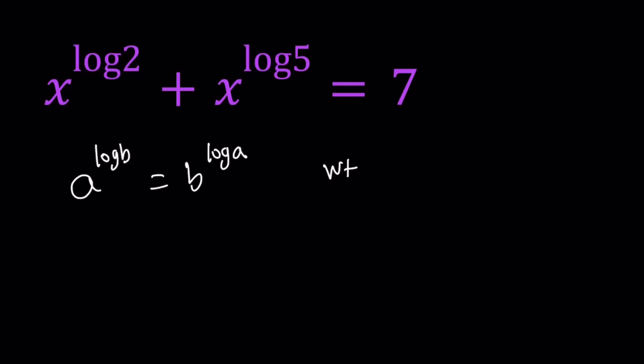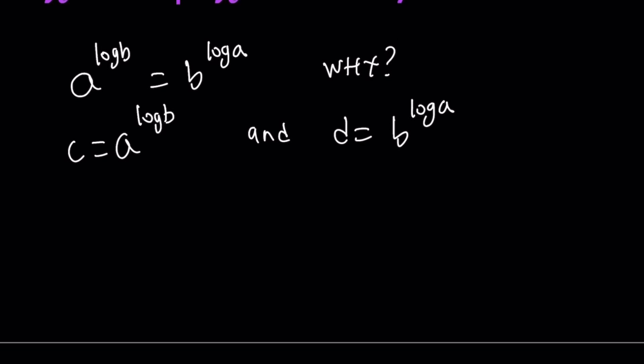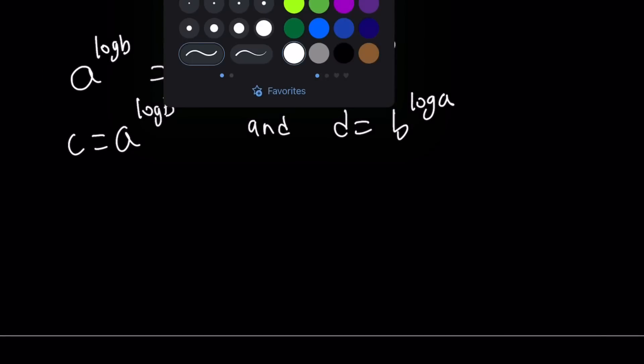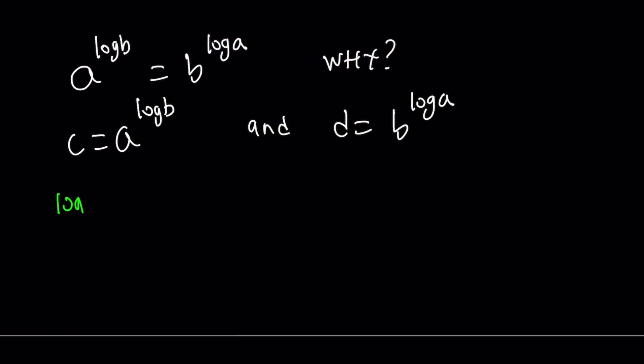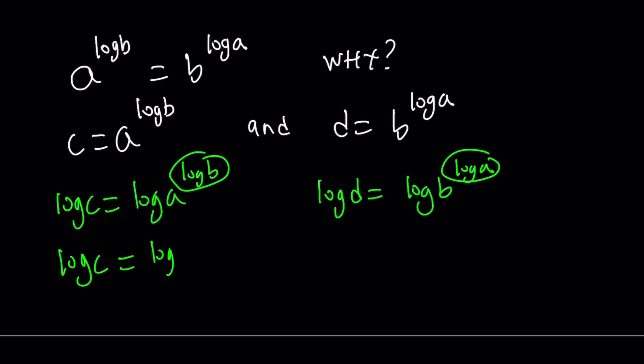So you might be questioning, why is this true? Let's go ahead and take a look. Let's set the first one to c, a to the power log b equals c, and d equals b to the power log a. So we're going to prove that c and d are equal. What am I going to do? I'm going to log both sides. Log c, which is log a to the power log b, and log d equals log b to the power log a. By using power properties, we can move these to the front. So log c is going to equal log b times log a, and log d is going to equal log a times log b. Log b times log a is the same thing as log a times log b from the commutativity property.